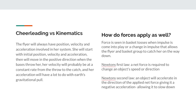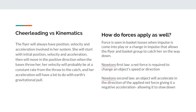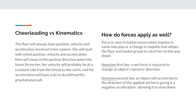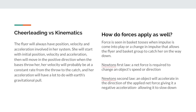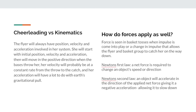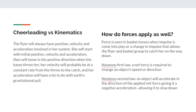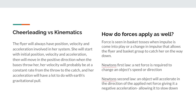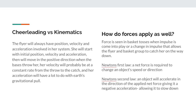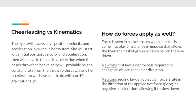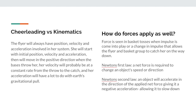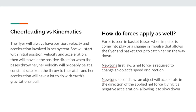So cheerleading versus kinematics: the flyer will always have a position, velocity, and acceleration involved in her own system. For me, it was kind of hard using Tracker to be able to find that because I think Tracker got confused on what was going on. But initially, she'll have negative 9.8 meters per second squared always on her — gravity will always be pulling her down — and there are also forces that apply.